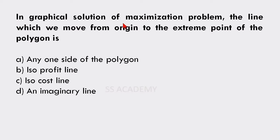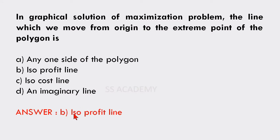In graphical solution of a maximization problem, the line which we move from the origin to the extreme point of the polygon — is it any one side of the polygon, isoprofit line, isocost line, or imaginary line? The answer is option B: isoprofit line.